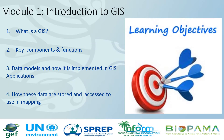Module 1: Introduction to GIS. This module has four learning objectives. At the end of this session, you should be able to have some basic understanding of what a GIS is, understand the key components and functions of the GIS, understand how spatial data is represented in a GIS, and understand how data are stored and accessed to use in GIS mapping.